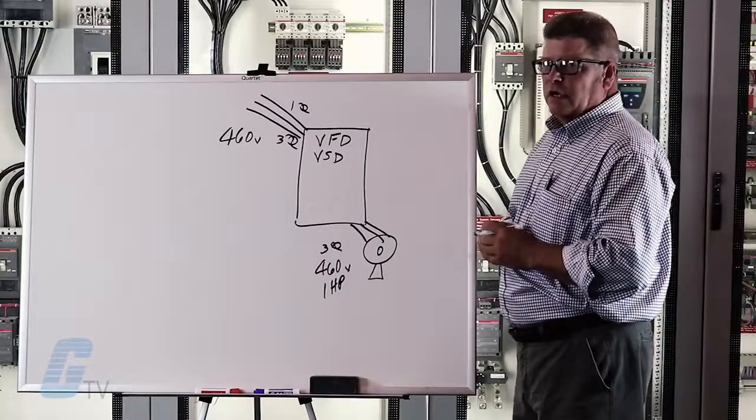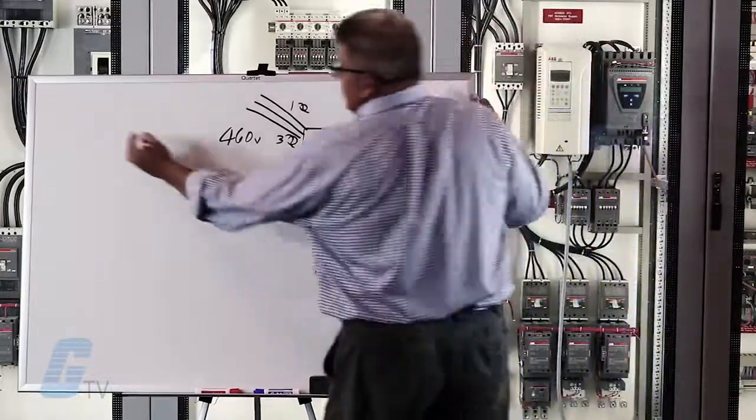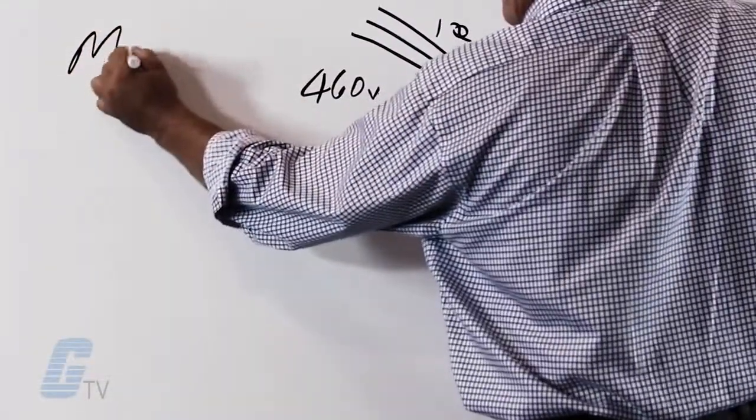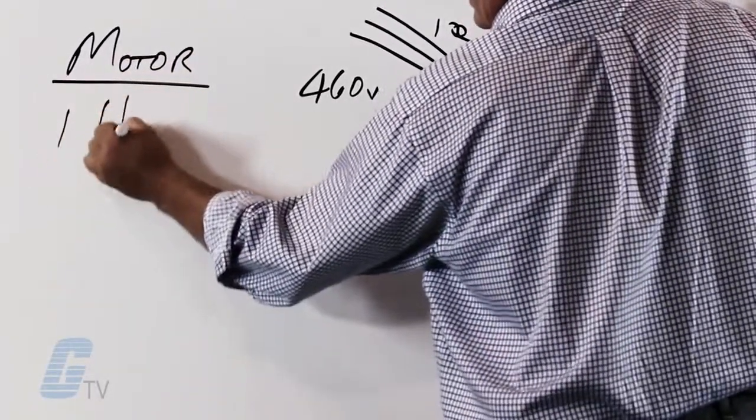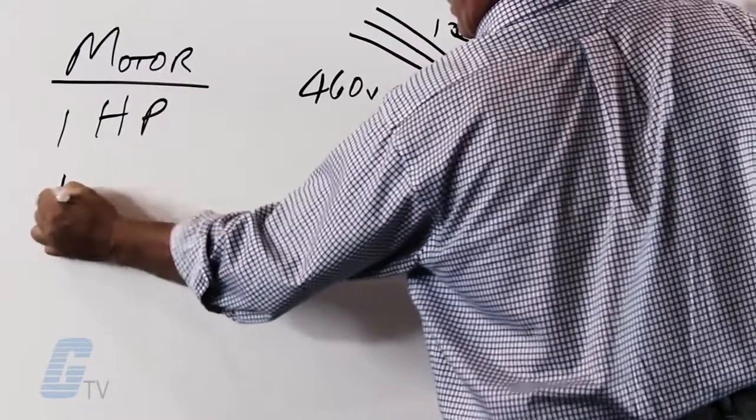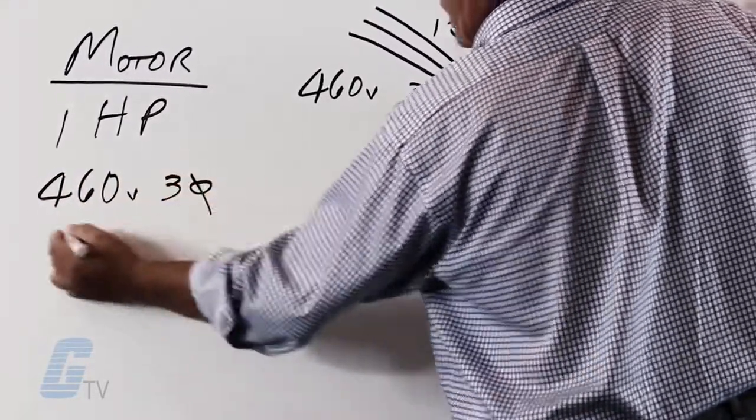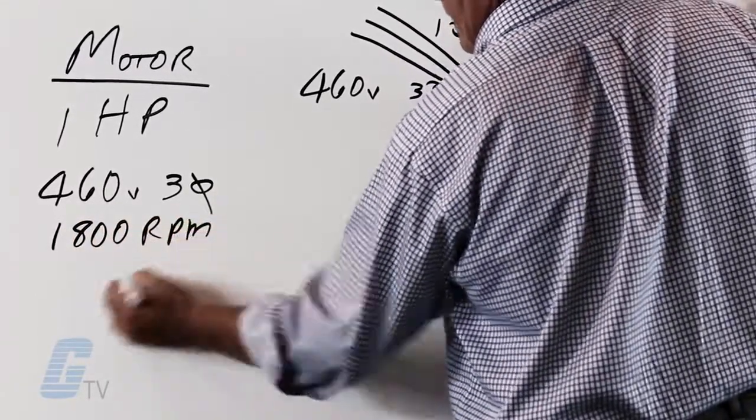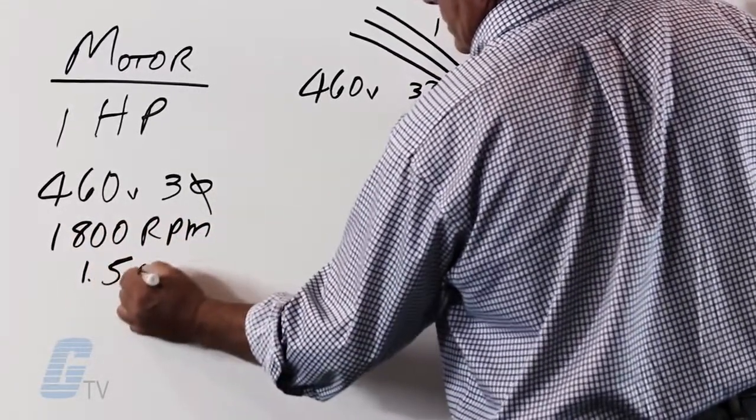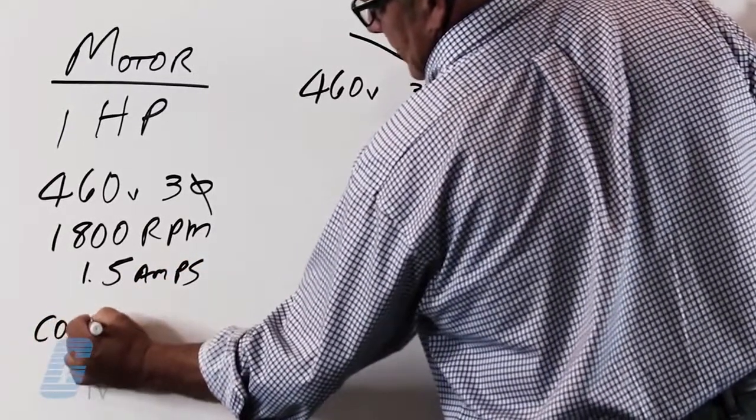Next thing we want to consider is what are the other aspects of the motor data. For our particular motor, one horsepower, 460 volts, three phase, 1800 RPM, 1.5 amps. And it is a constant torque application.